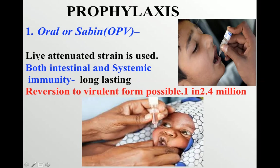The oral Sabin vaccine is a live attenuated strain using all three strains. Because it is given orally, it goes into the intestines and produces secretory IgA, giving intestinal immunity. It then enters the bloodstream, producing systemic IgG immunity. However, the disadvantage is that because it is a live vaccine, it can revert back to its virulent form — very rarely, one in 2.4 million doses.